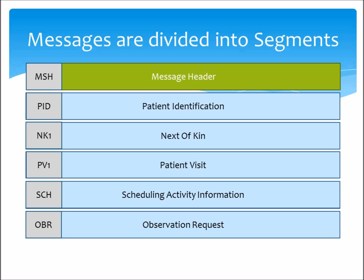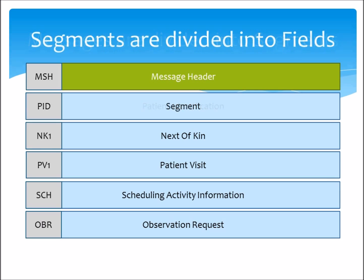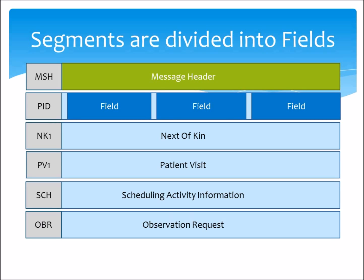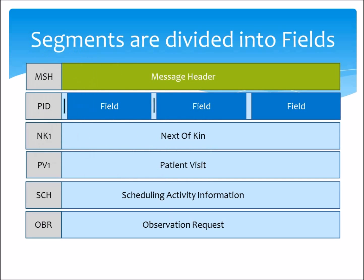As we delve deeper into the HL7 message structure, we find that segments are themselves divided up into fields. These are normally separated by a pipe character between each of the fields. Fields each have an assigned value type that relates to its position in the segment. So in this greatly simplified example PID segment, we might find the patient name at PID 1, the date of birth at PID 2, and details about where they live at PID 3.